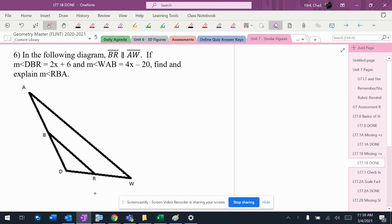Because I have those corresponding angles, I have similar triangles again. So let's see, B matches up with A, R matches up with W, and then D matches up with B. So there's what I have for similar triangles.